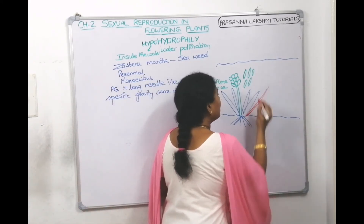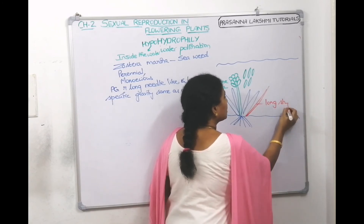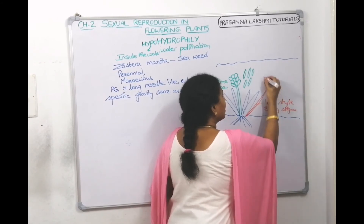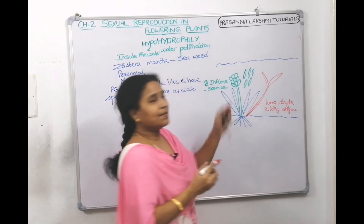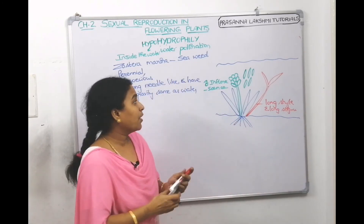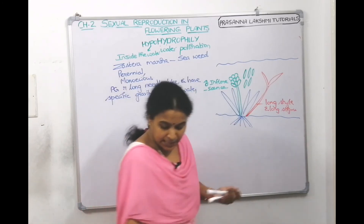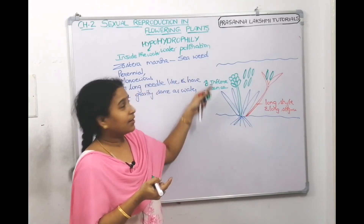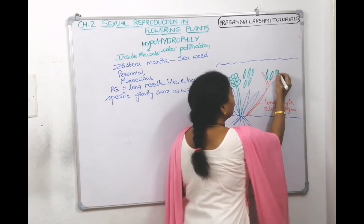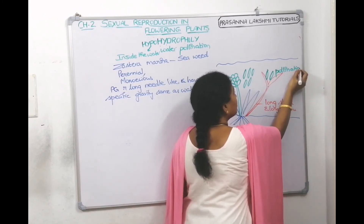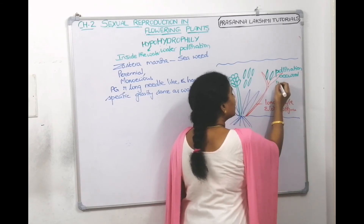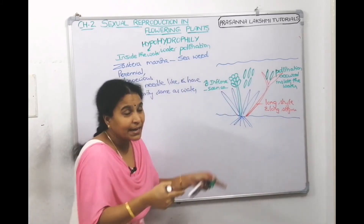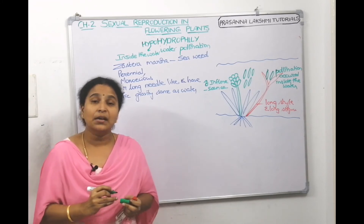Since the pollen grains of Zoostera have the same specific gravity as water, they remain suspended within the water. The female inflorescence has a long style and long stigma. At maturity, the long stigma receives the needle-like pollen grains inside the water. Since pollination occurred inside the water, this is an example of hypo-hydrophily.